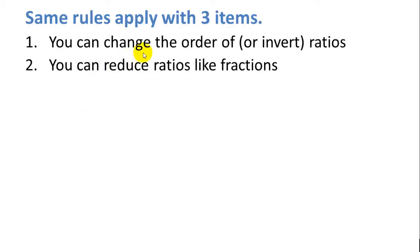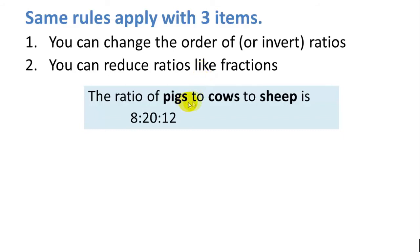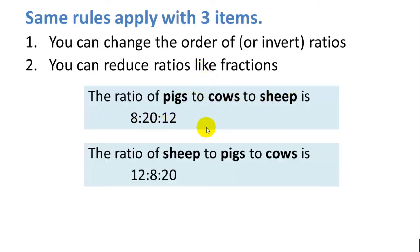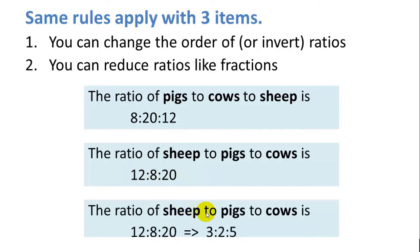Now the same rules apply when you have 3 items. You can change the order of or invert ratios, although most often you don't see them written as fractions when there are 3 of them, more often expressed in a colon format. And you can also reduce the ratios like fractions. So the ratio of pigs to cows to sheep is 8 to 20 to 12. So we can change the order of those if we want. The ratio of sheep to pigs to cows is 12 to 8 to 20. So you can see that if we change the order of the labels, we also need to change the order of the numbers correspondingly. And then we can see that all these numbers are divisible by 4, so we could reduce this to a simpler form. The ratio of sheep to pigs to cows is, well, this is equivalent to 3 to 2 to 5. So in its simplest form, it takes this format.